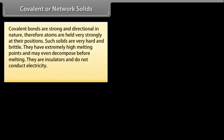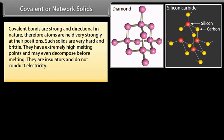Covalent or network solids: Covalent bonds are strong and directional in nature. Therefore, atoms are held very strongly at their positions. Such solids are very hard and brittle. They have extremely high melting points and may even decompose before melting. They are insulators and do not conduct electricity. Examples: Diamond, Silicon, Carbide.